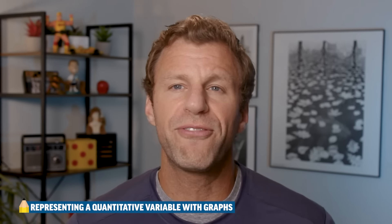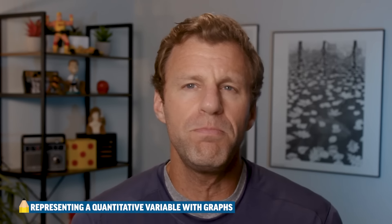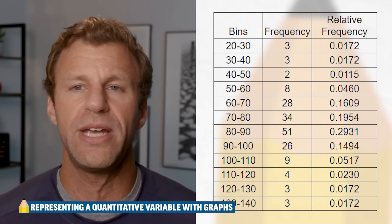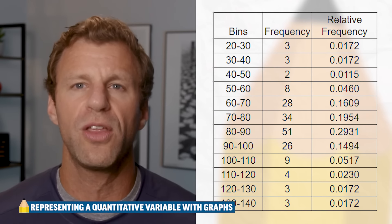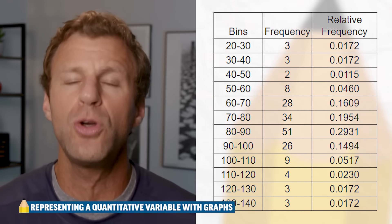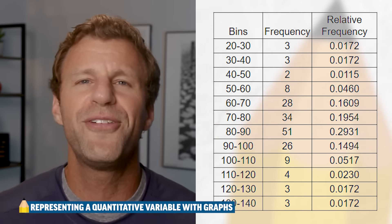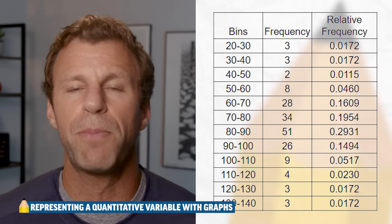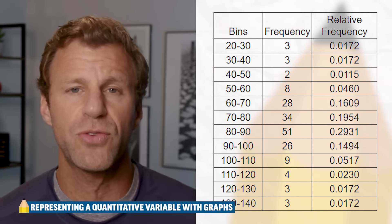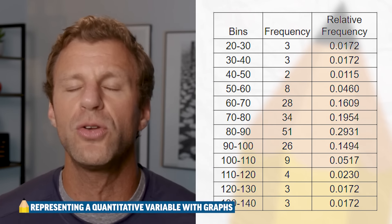Quantitative variables can also be analyzed into a frequency table or a relative frequency table. Because we don't have categories or names but numbers, the first thing we have to do is create bins — basically equal-sized intervals. Here we have data from a sample of trees where we measured each tree's height, with bins of 20 to 30 feet, 30 to 40 feet, and so forth. These are left-handed bins, meaning you equal a number on the left and go up to but not including the number on the right. Then you count how many trees fall into each bin to get the frequency, or divide by the total of 174 trees to get the relative frequency.